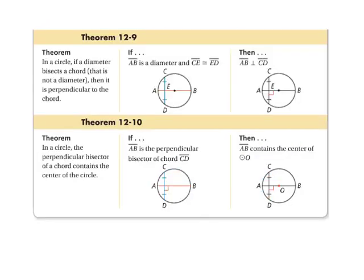Theorem 12-9 states that in a circle, if a diameter bisects the chord that is not the diameter, then it is perpendicular to the chord. Since segment AB bisects segment CD, and we can see that segment CE is congruent to segment ED, then segment AB is perpendicular to segment CD. Theorem 12-10 states that in a circle, the perpendicular bisector of a chord contains the center of the circle. So, since segment AB is perpendicular to segment CD and bisects it, segment AB must contain the center and is therefore the diameter.